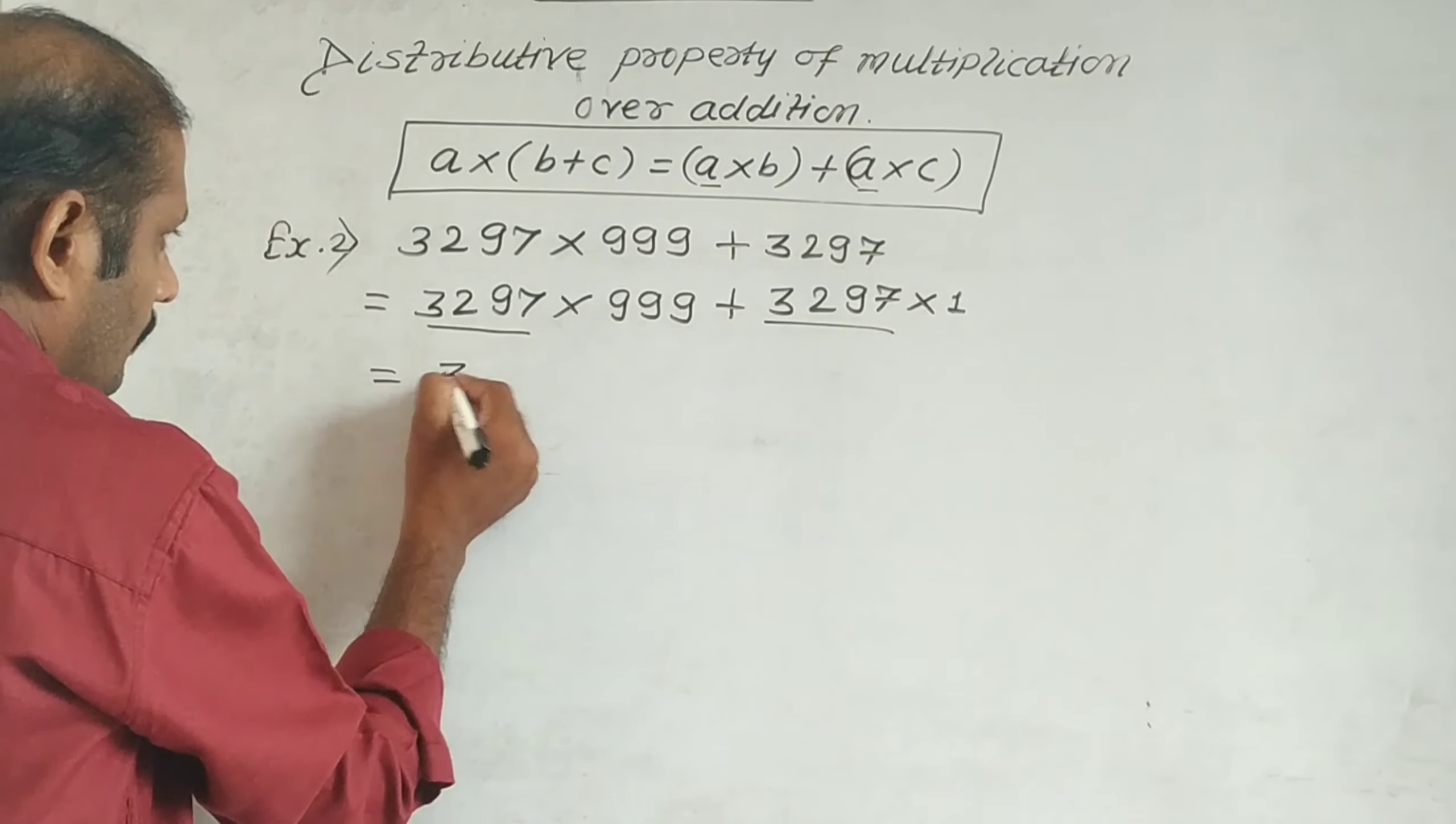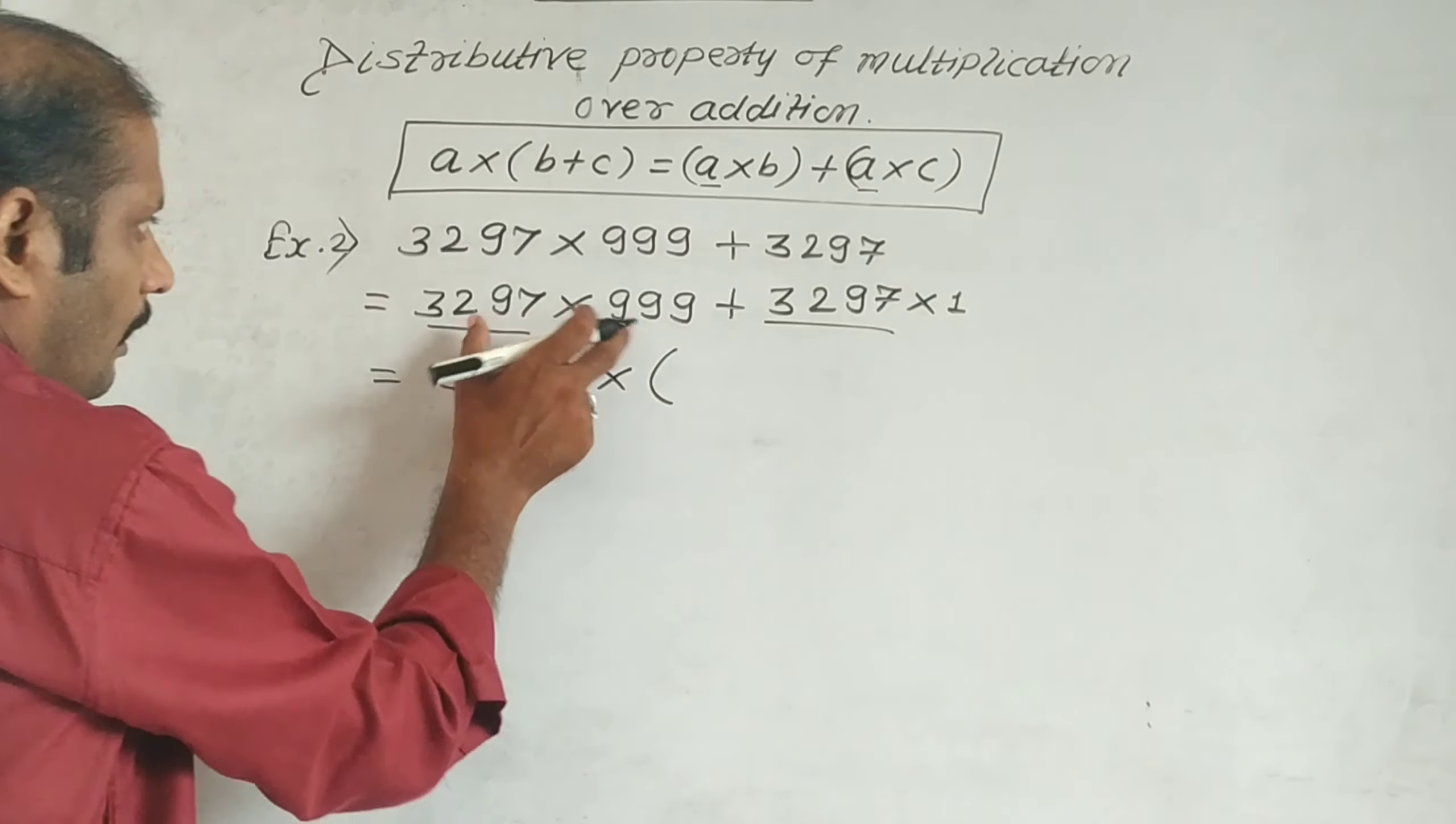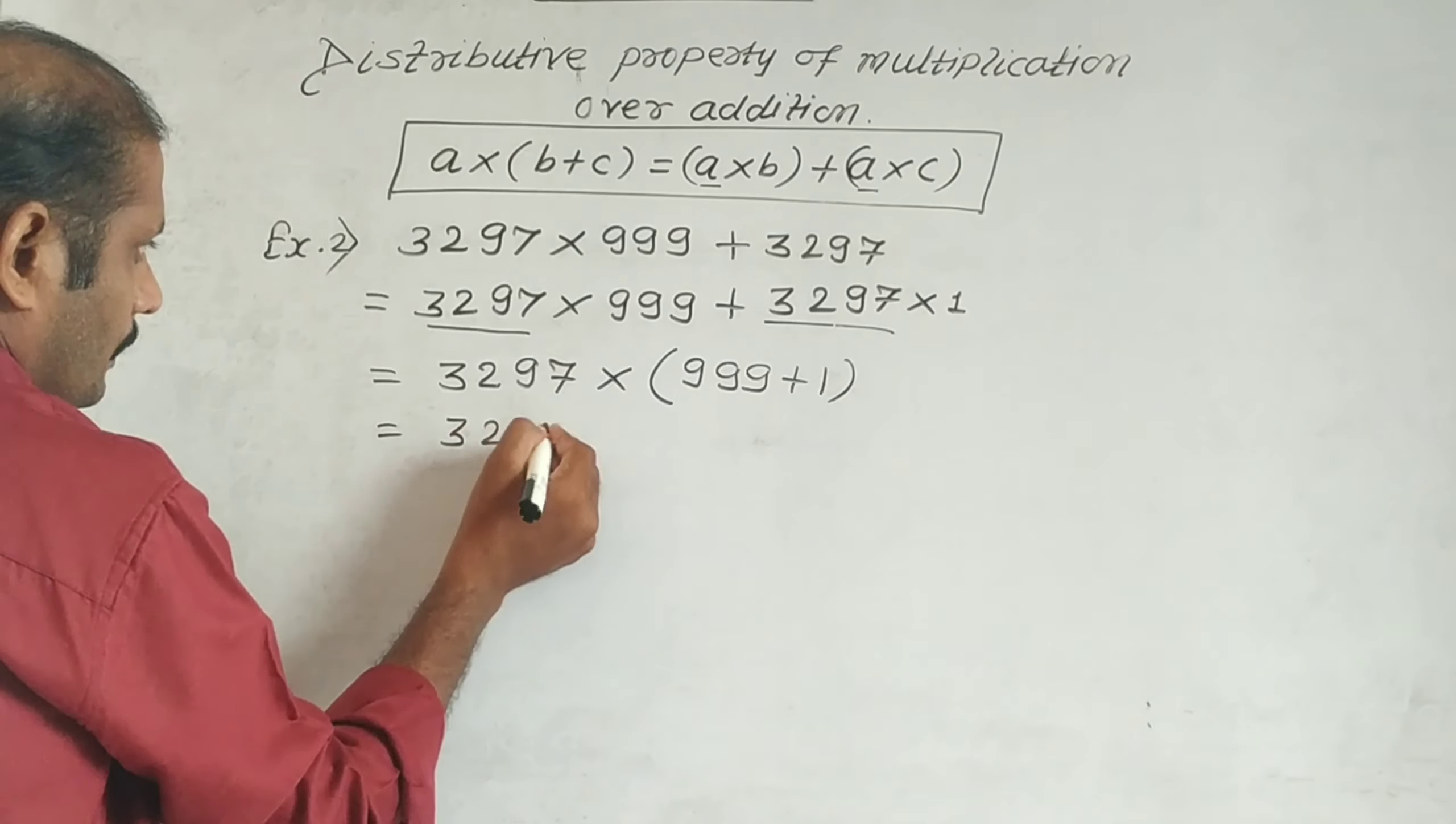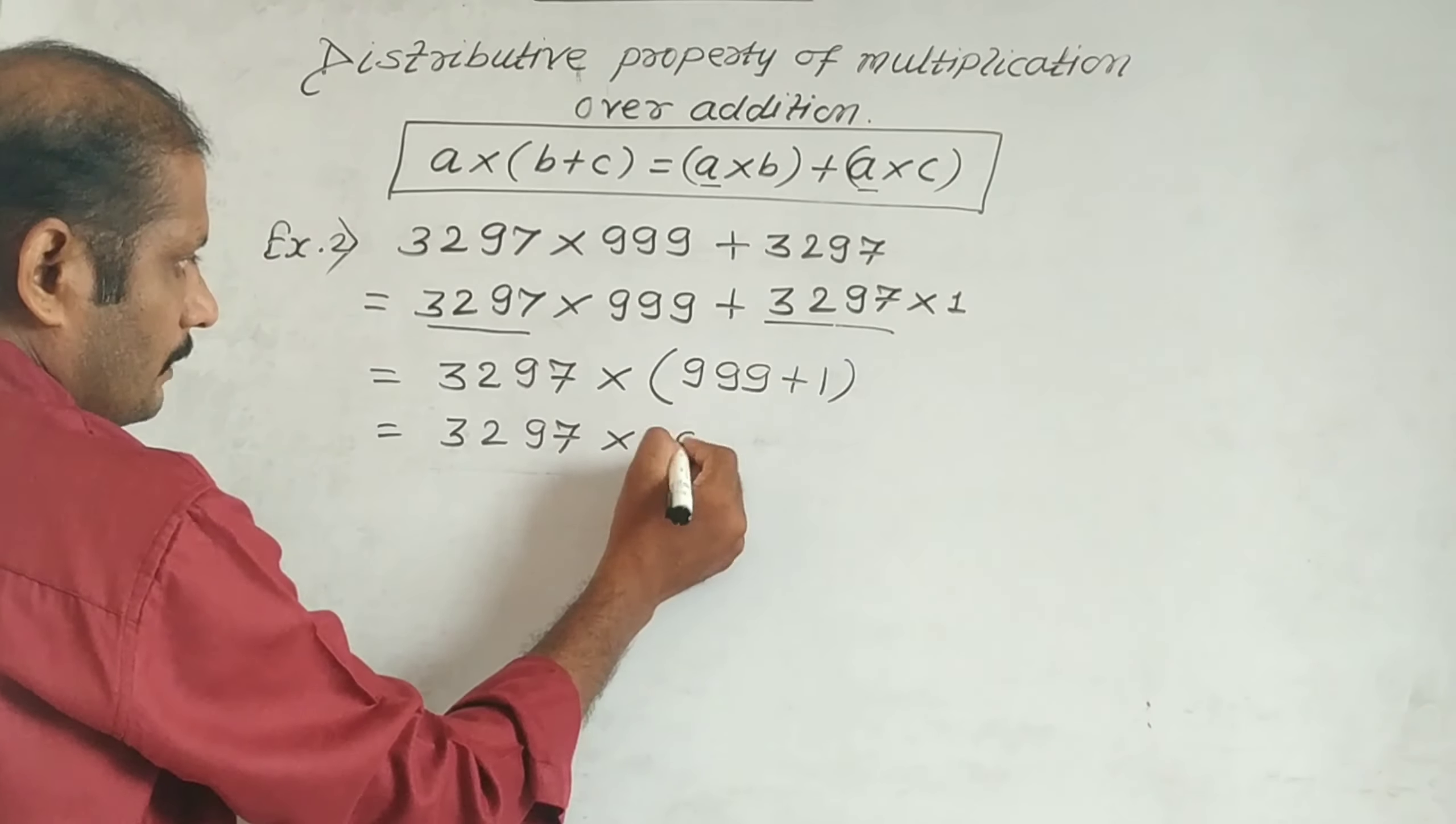3297 multiplied by... First term has 999 remaining, plus second term has 1 remaining. So 3297 × (999 + 1). 999 + 1 = 1000.